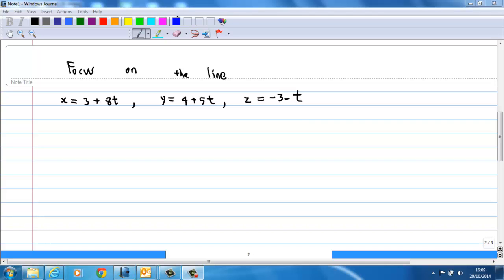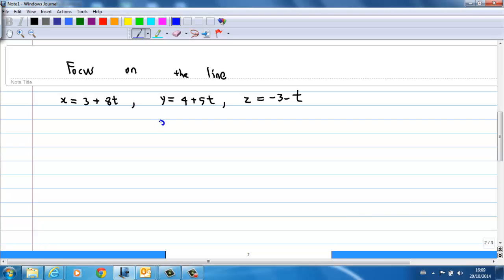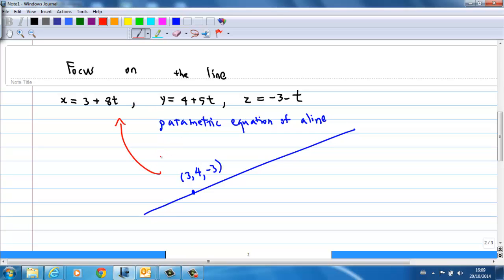First, let's focus on the equation of this line. This equation is called a parametric equation of a line. This line passes through a point with coordinates (3, 4, -3). You can get this by substituting t = 0.